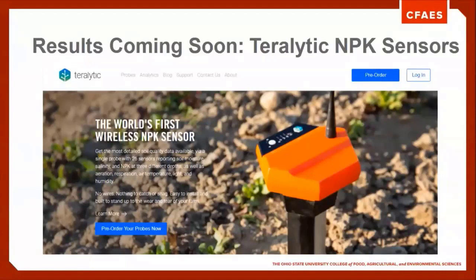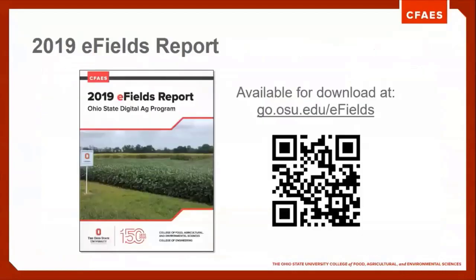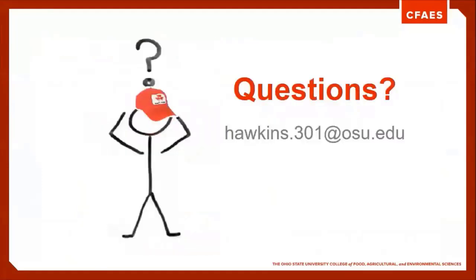Another project kicking off in nutrient management is looking at real-time sensors that measure or estimate nitrogen, potassium, and phosphorus in the field. We'll be installing some of these sensors across Ohio this fall, excited to see if they have the potential to help reduce fertilizer use by improving efficiency throughout the season. If you're interested in any of this or the hundreds of trials we've conducted over three years in Ohio, download the eFields report and feel free to reach out to your local extension educator or the digital ag team.